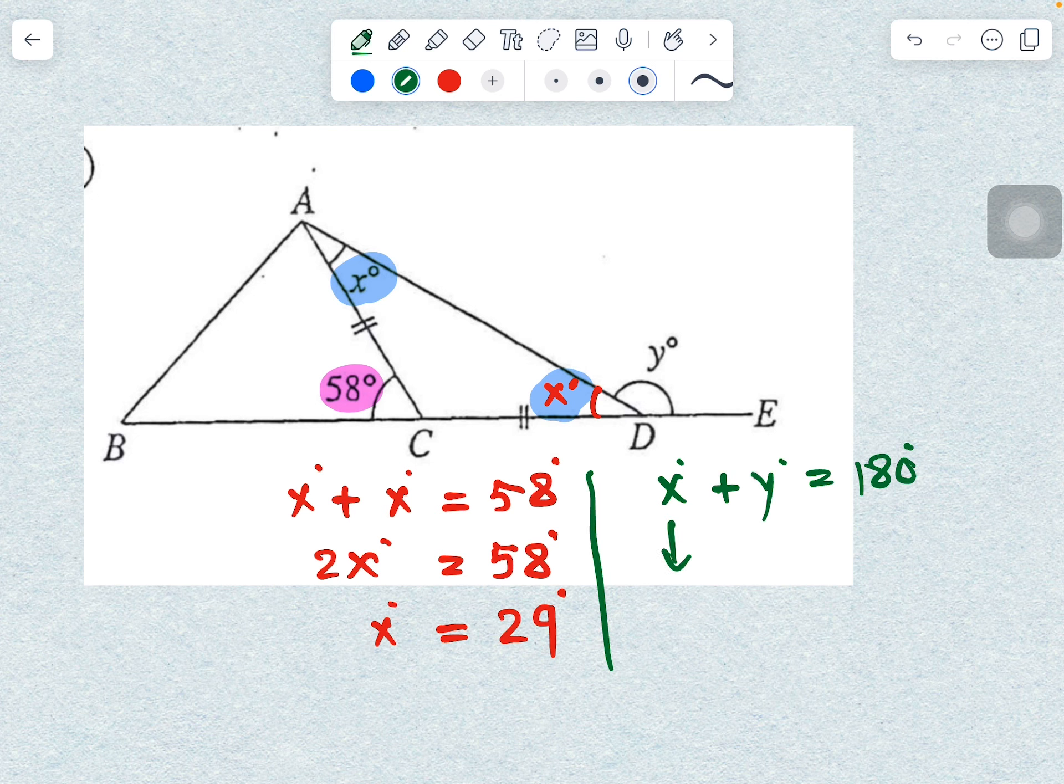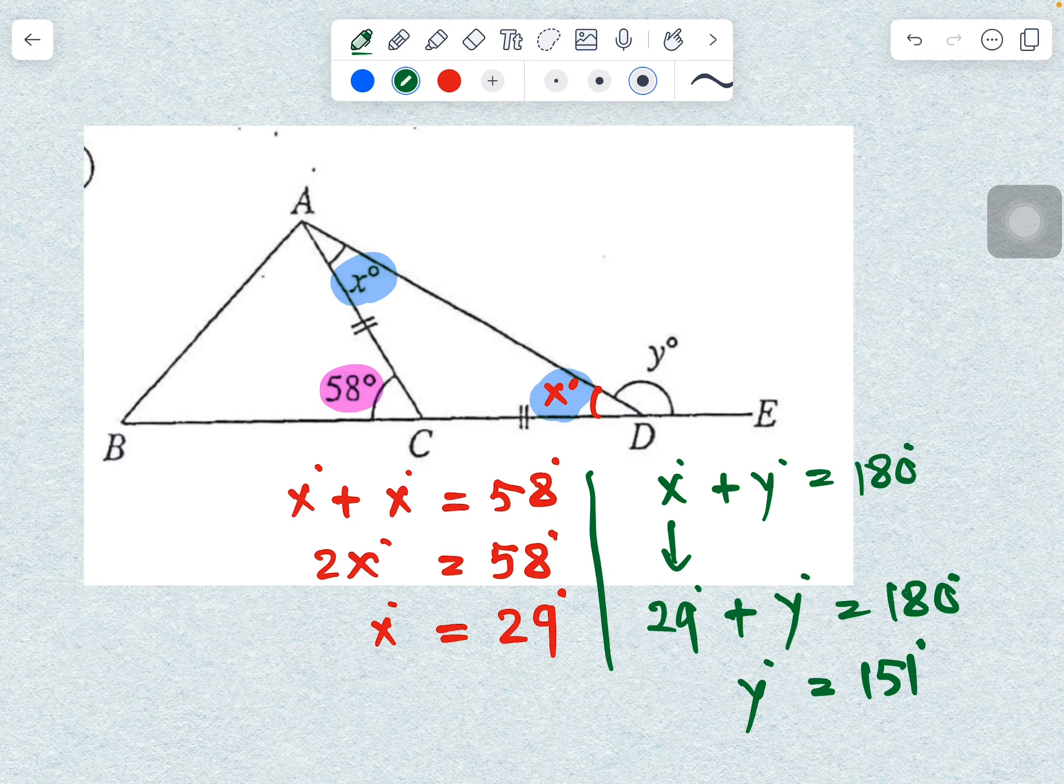29-degree plus y-degree equals 180-degree, so y-degree equals 151-degree.